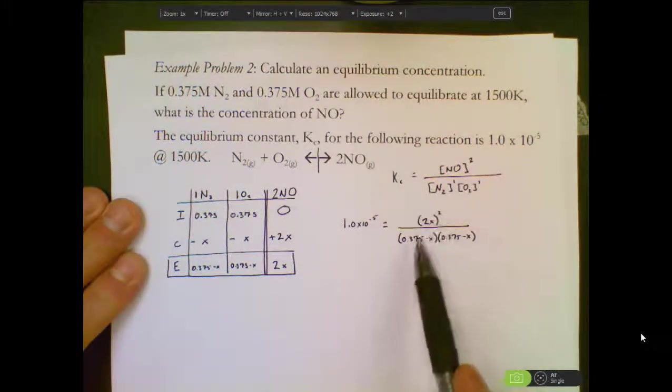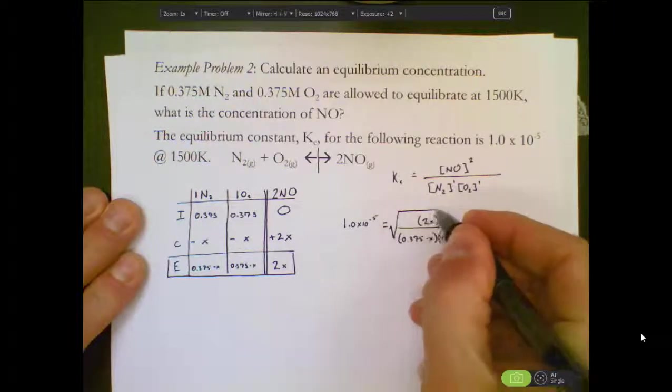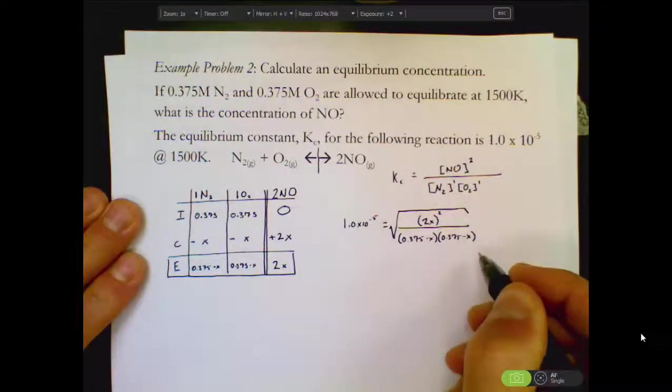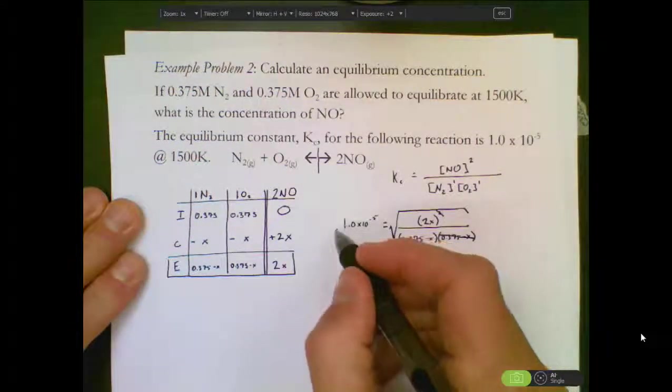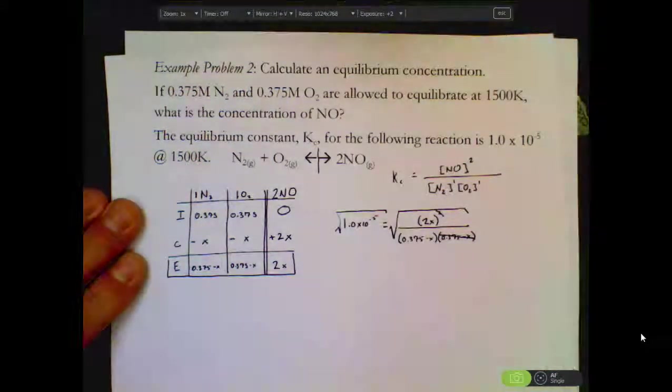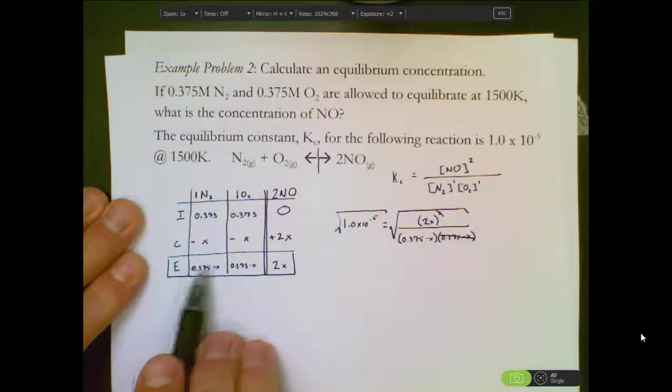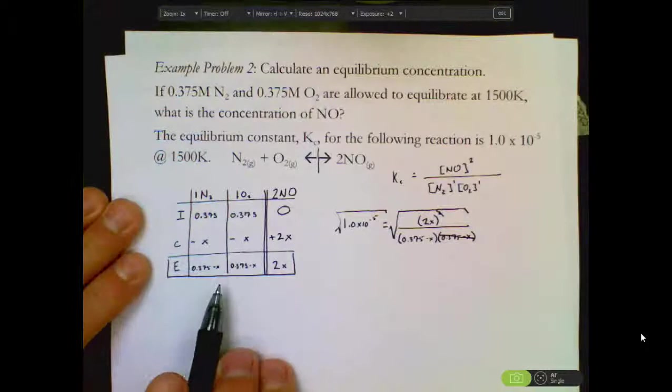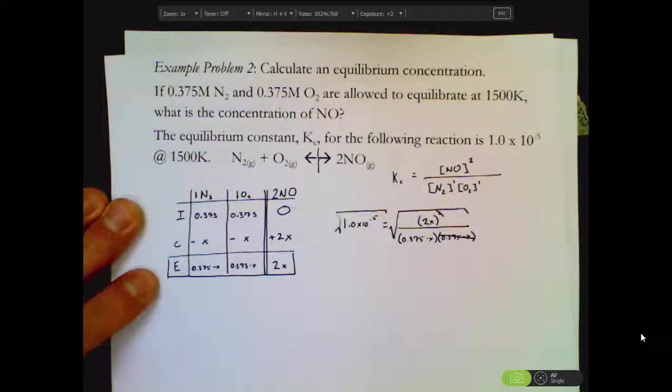Because I have a square here and because these are really 0.375 minus X squared, I could square root this whole side, which means that my 2 crosses off and one of these crosses off. But if I do that, I need to square root my left side as well. I could also just eliminate my minus X because K is so small, the amount that we're going to take off of our reactant is going to be so small, it's going to be negligible in terms of the overall change.